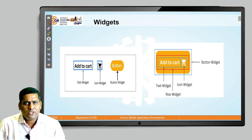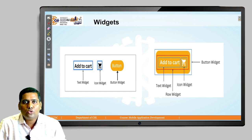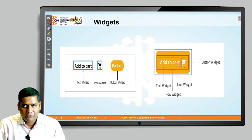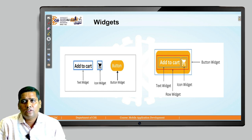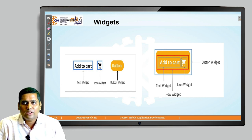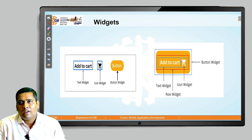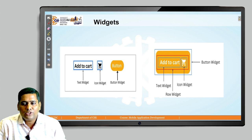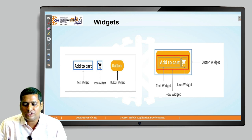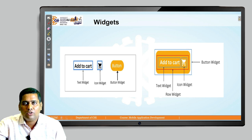The first widget is a text widget where you can put your text. We have an icon widget to show images to your user. We also have a button widget. On the right side we have a complex widget — a button with text on it and an icon widget. We can use simple widgets to create complex widgets as well.